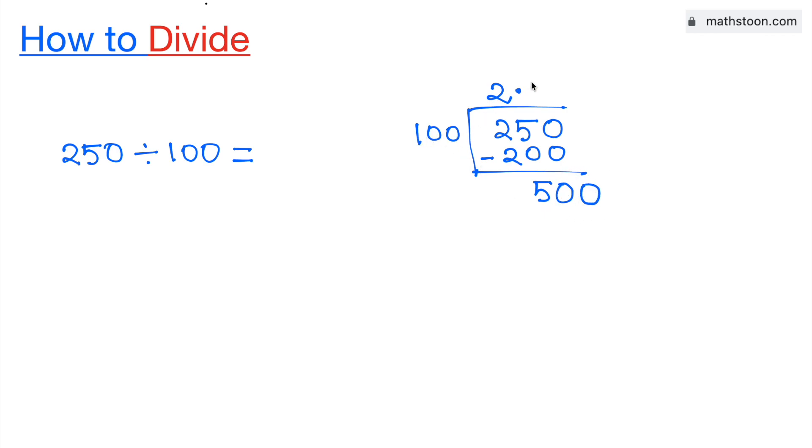Now 100 times 5 is 500. Subtract, we get 0.